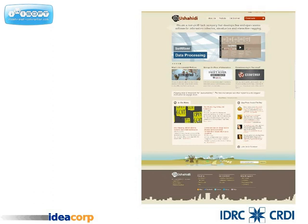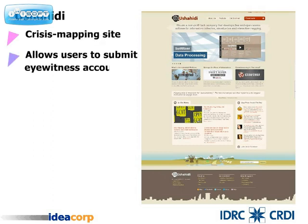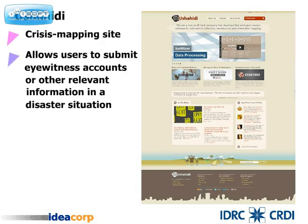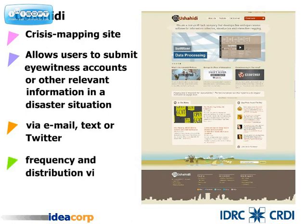The use of Ushahidi in the aftermath of the January 2010 earthquake in Haiti is a great example. Ushahidi, or Swahili for testimony, is a crisis mapping site that allows users to submit eyewitness accounts or other relevant information in a disaster situation via email, text, or Twitter, and then visualize the frequency and distribution of these events in a map.